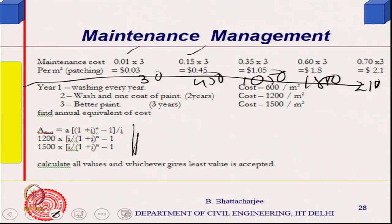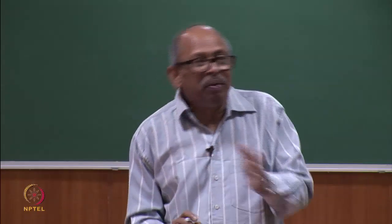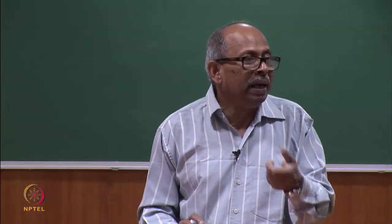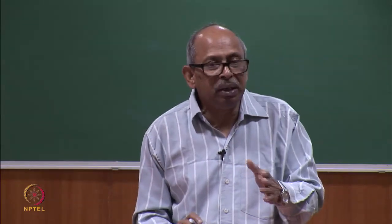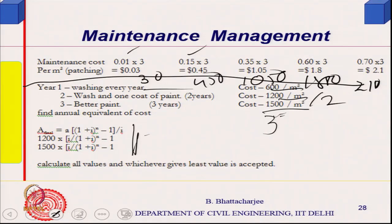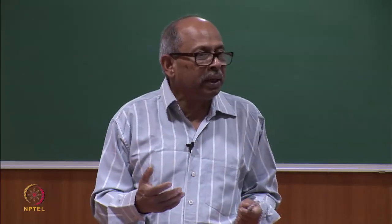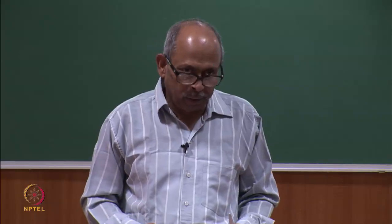For example: yearly washing at 600 rupees, two-yearly at 1200 rupees (600 per year average — same), three-yearly at 1500 rupees (500 per year — best on simple average). If you take time value of money into account, spending later is favored because dividing by (1 + i)ⁿ reduces the present value. You can compare the present worth of each option and whichever gives the best value, choose that. This is another way of finding out the periodicity of external or internal painting when alternative options are available.